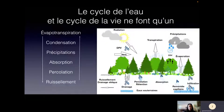Vous avez tous vu dans tous les bouquins le cycle de l'eau, qui est finalement un élément essentiel, le cycle de la vie dans la nature. Où est-ce que les arbres évaporent de l'eau, ça se condense dans la partie aérienne, et par la suite ça génère des précipitations. L'eau au sol est absorbée par les arbres, absorbée par le sol. Il y a percolation, ruissellement, puis le cycle recommence.